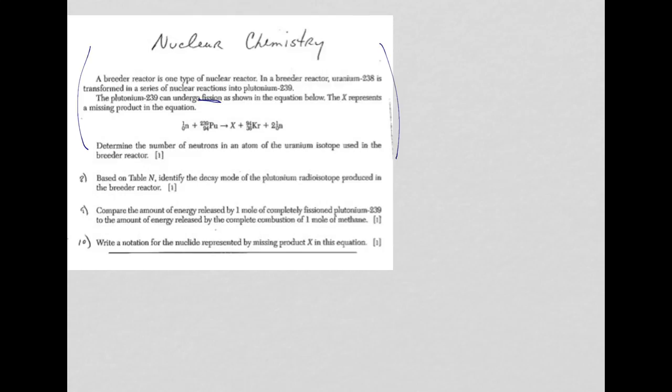Question 8, based on reference table N, identify the decay mode of the plutonium radioisotope produced in the breeder reactor. We're looking for the decay mode of Pu-239.